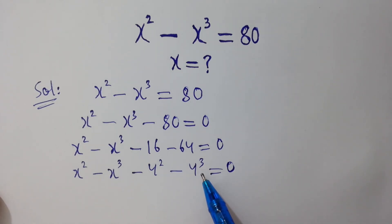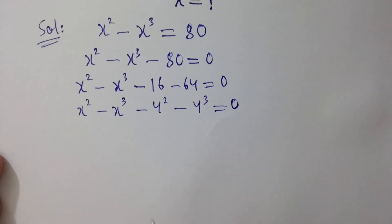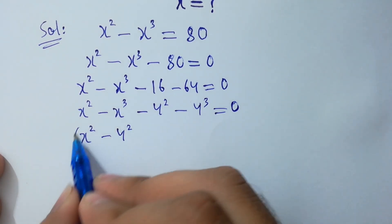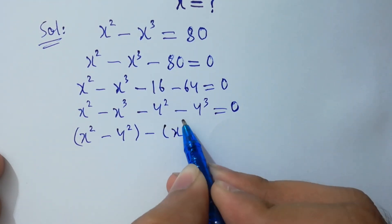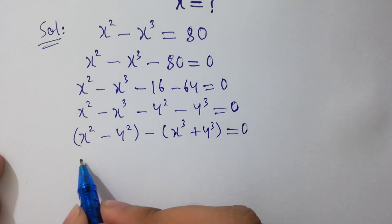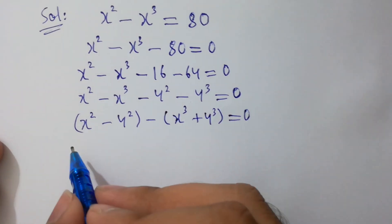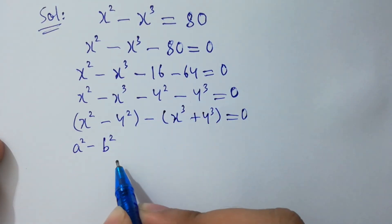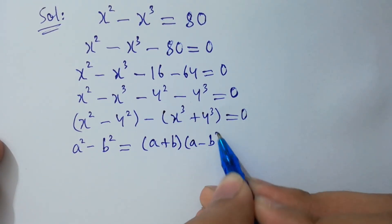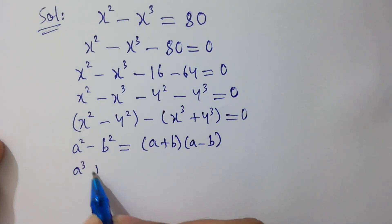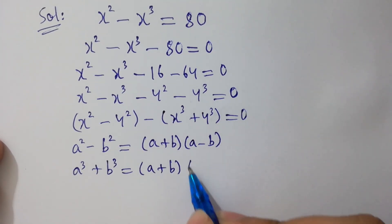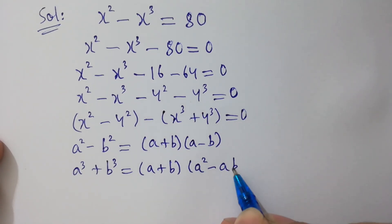Note that 4 times 4 times 4 equals 64. Now we apply the identities: a squared minus b squared equals (a plus b)(a minus b), and a cubed plus b cubed equals (a plus b)(a squared minus ab plus b squared).